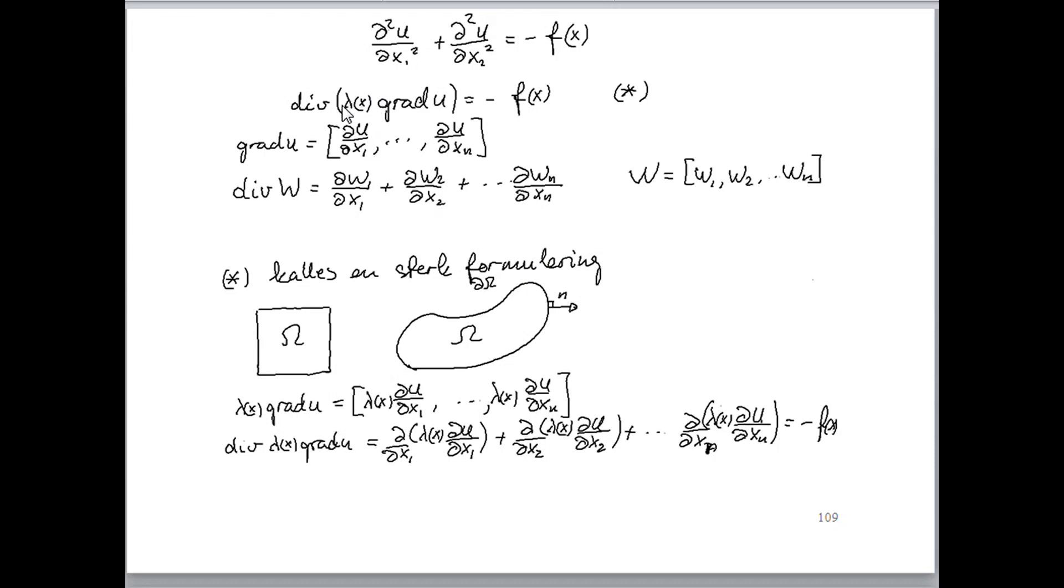Let u be some scalar function of R^n. So it's defined on R^n, at least in some subset of R^n, which we call as usual omega. The boundary of omega is, as usually, denoted del omega.